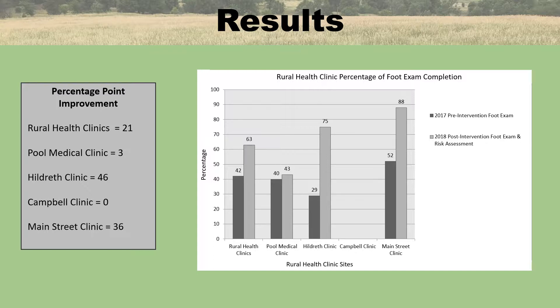This slide shows rural health clinic percentage of foot exam completion. Overall, there was an improvement from 42% to 63%, meaning a 21 percentage point improvement. Pool Medical Clinic increased from 40 to 43%. Hildreth Clinic had a 46 percentage point improvement from 29 to 75%. Campbell Clinic did not have any patients present pre or post that fit the criteria. Main Street Clinic improved 36 percentage points from 52 to 88%.